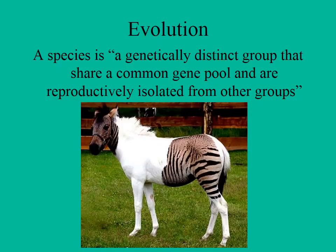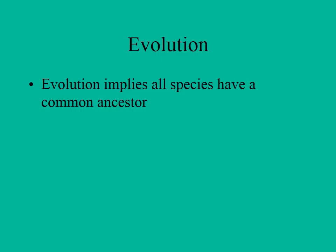So what is a species? A species is a genetically distinct group that shares a common gene pool and is reproductively isolated from other groups. That means if you have two organisms that can breed together and make an offspring, they're not necessarily the same species — this is a picture of a zorse, which is a horse and a zebra crossing. They made an offspring, but that offspring cannot reproduce itself; it's sterile, much like a horse and donkey make a mule, or a lion and tiger make a liger. What makes them different species is that even if they can reproduce, they can't produce viable offspring — they are reproductively isolated and therefore a separate species.